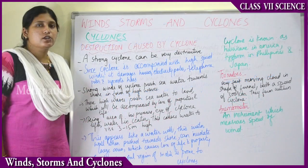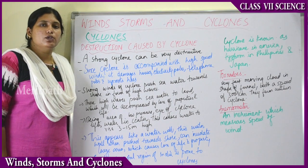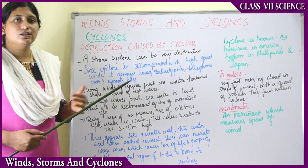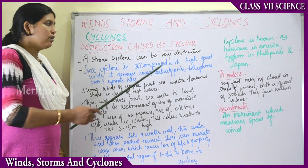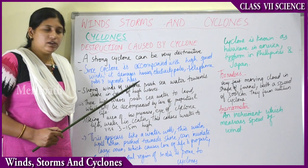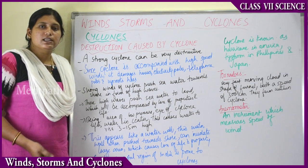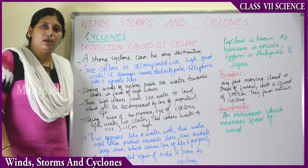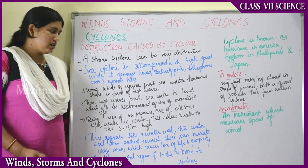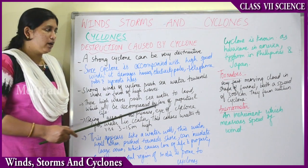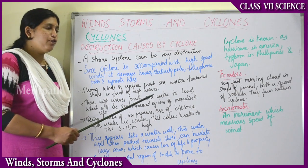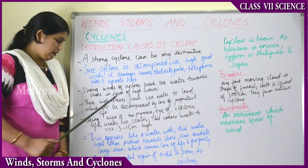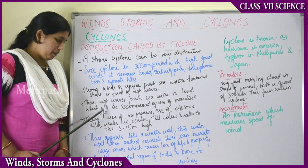A strong cyclone can be very destructive and causes great loss. Since cyclones are accompanied by high speed winds, they damage houses, electricity power lines, and telephone wires, and uproot big trees right from the roots. Strong winds of a cyclone also push sea water towards the shore in the form of large waves.